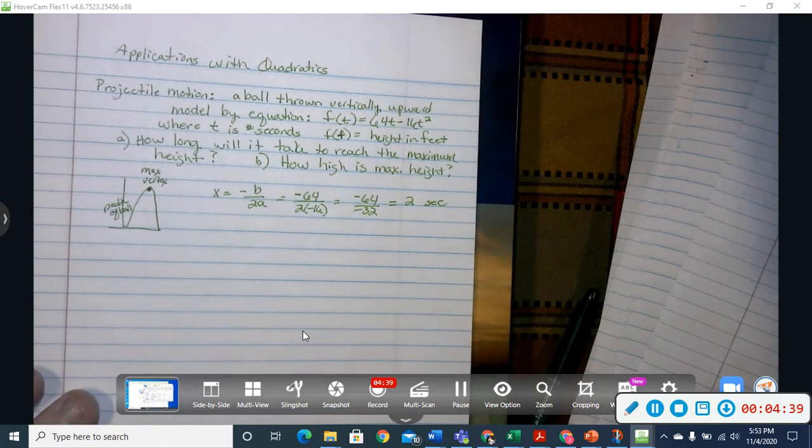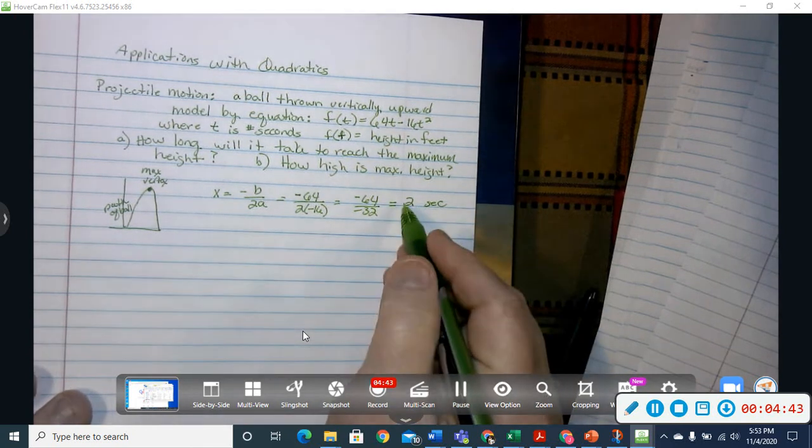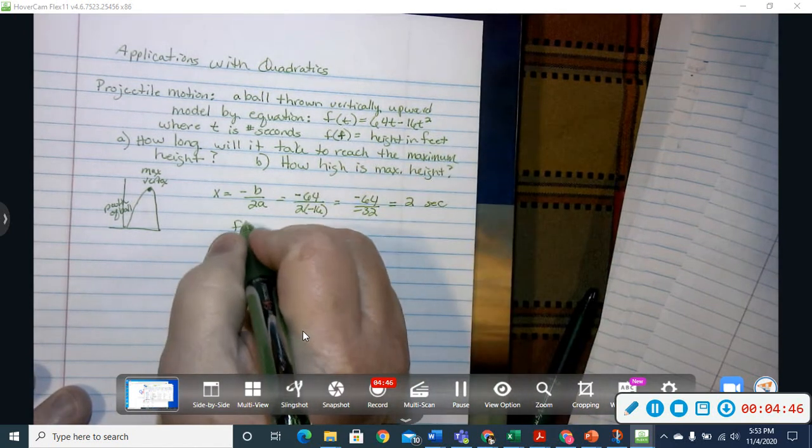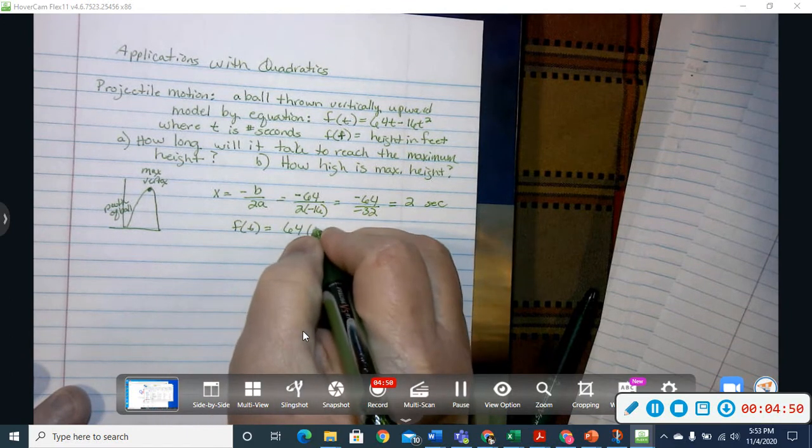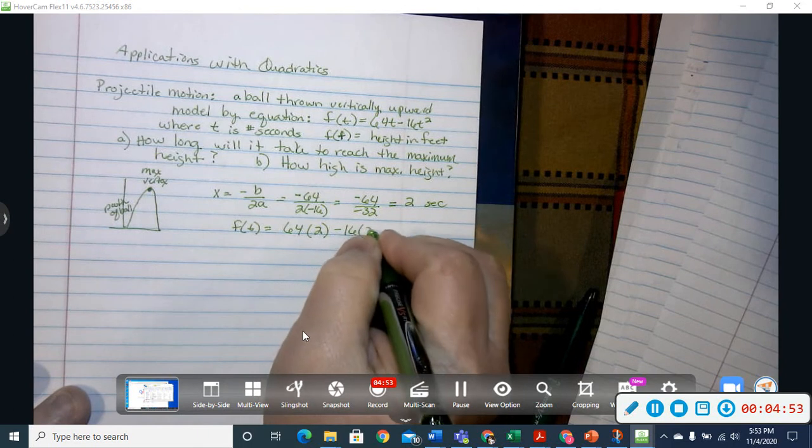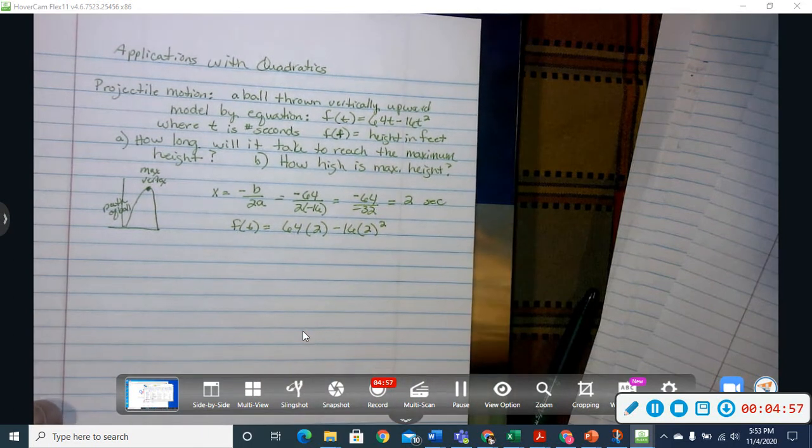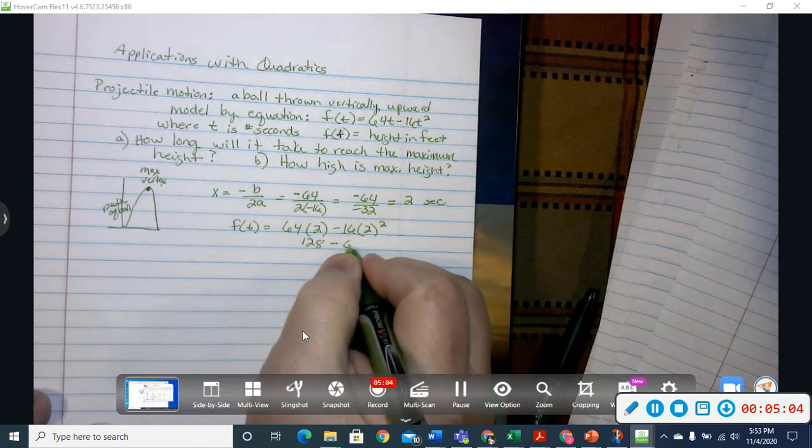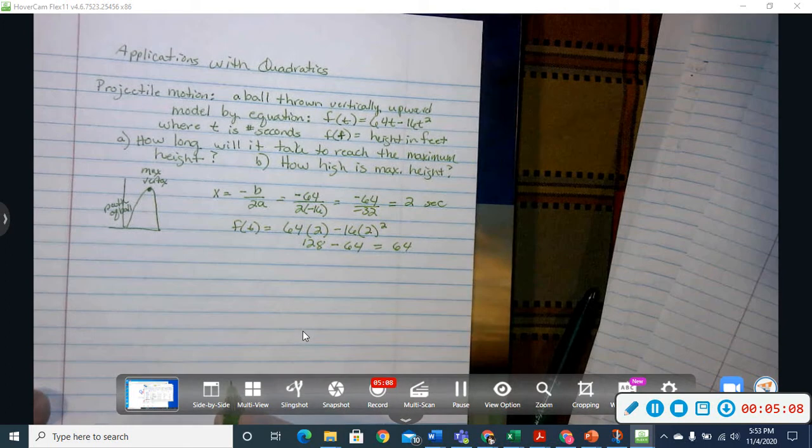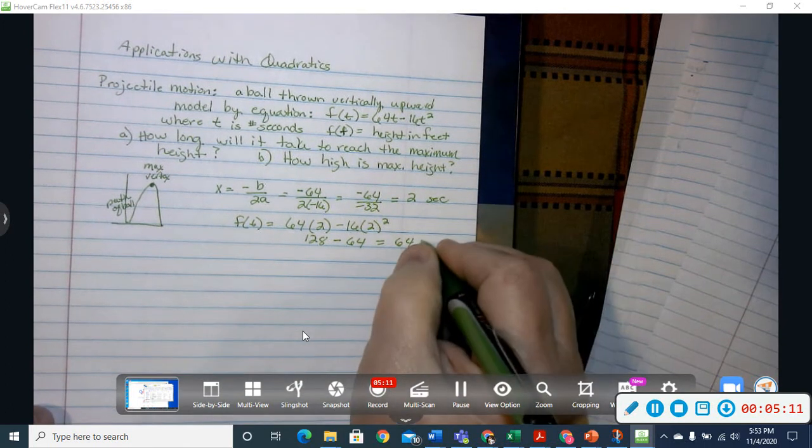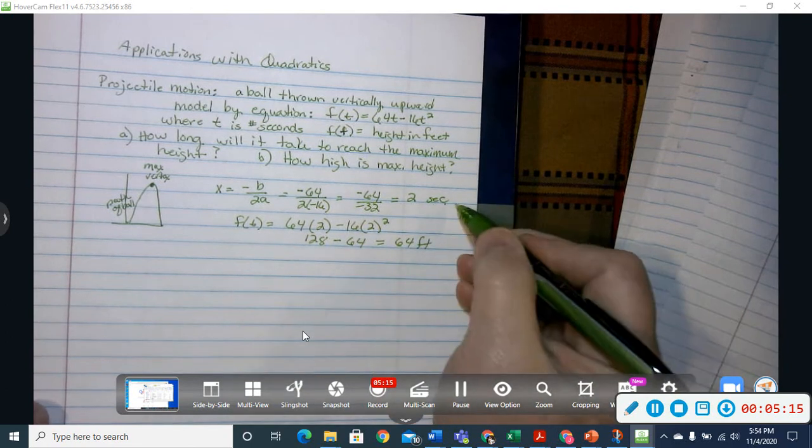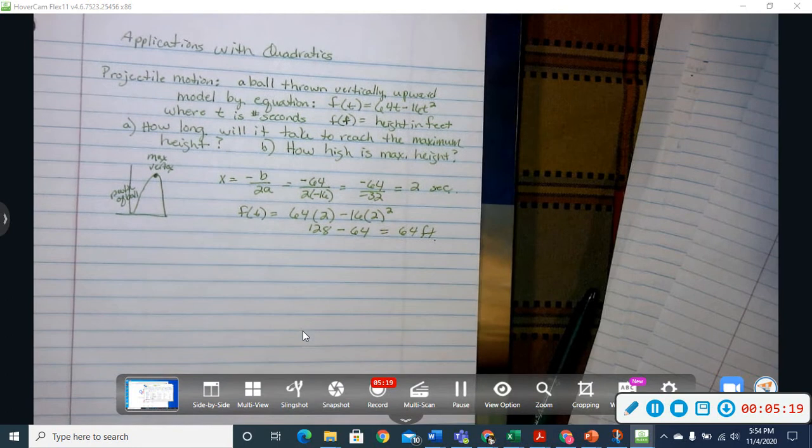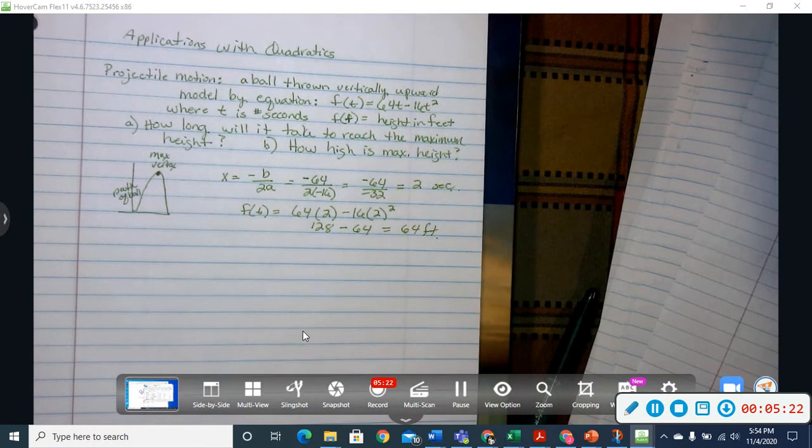The next thing we want to do is to find out how high does it go. So we take this answer and we plug it in, so f(t) will be 64 times 2 minus 16 times 2 squared. That gives us 128 minus 64 which is 64. So it takes 2 seconds to get to the maximum height and the maximum height is 64 feet. So that is a sample problem for finding or using projectile motion.